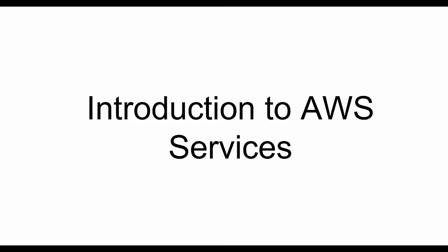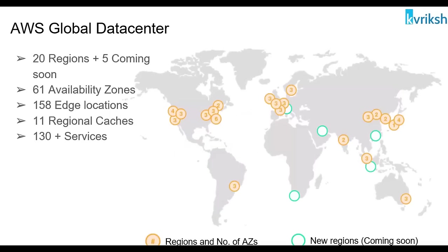Before starting this lecture, I want you to understand a few things about AWS. First is AWS global data centers. Whenever we use some AWS services, we will deploy them in some AWS geographical area. That geographic area is called AWS regions. Across the world there are different AWS regions — in the US there are seven regions, in India there is one region.